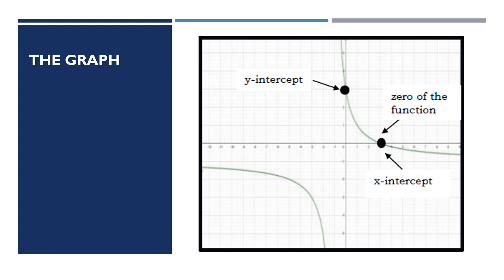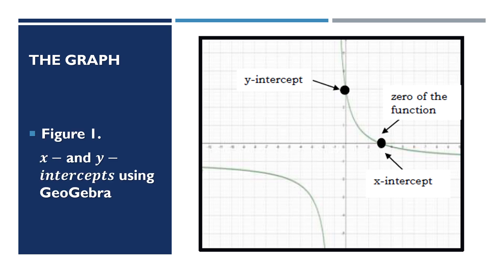Here is the graph where you can find the y-intercept, the x-intercept, and the zero of the function. The y-intercept is located along the y-axis, meaning x is equal to 0, and the x-intercept is located on the x-axis, so y is equal to 0. This graph is obtained using GeoGebra.